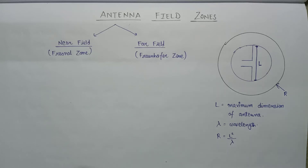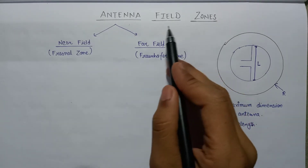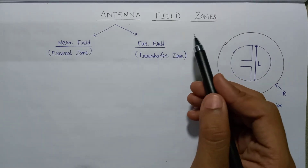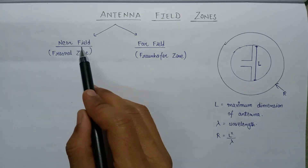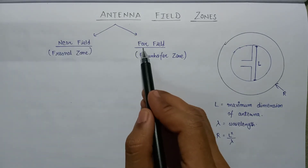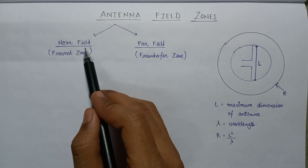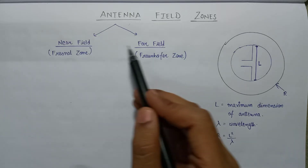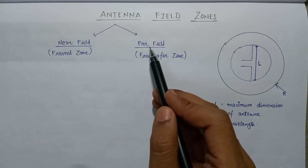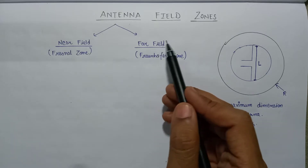Welcome all. In this lecture we are going to study about antenna field zones. The field zones for the antenna are classified into two types: the first type is the near field and the second type is the far field. The near field is the field that is nearer to the antenna, while the far field is termed as far field because it is far from the antenna.